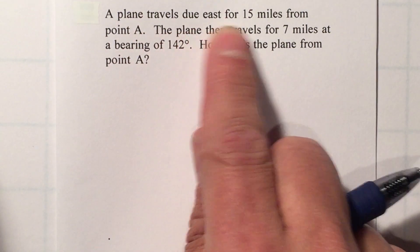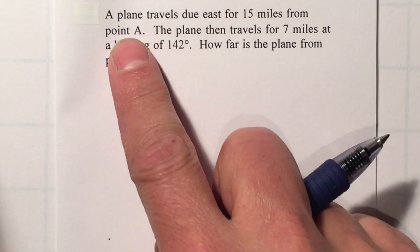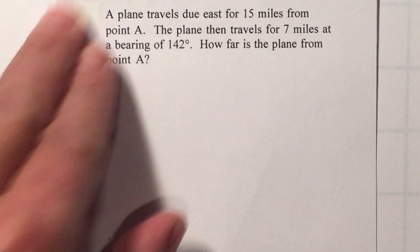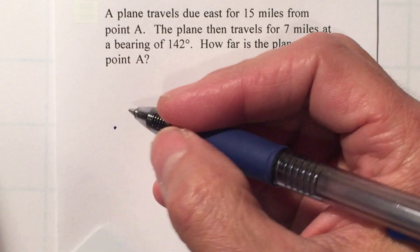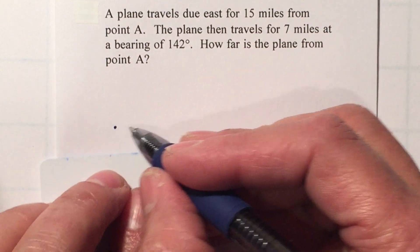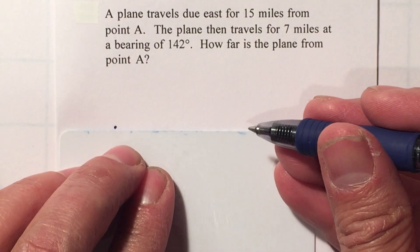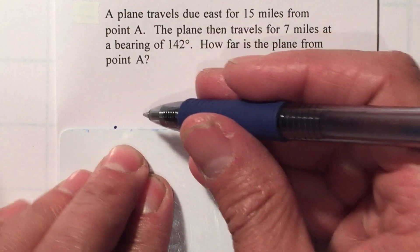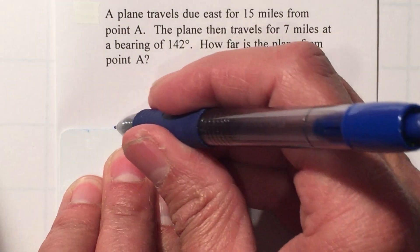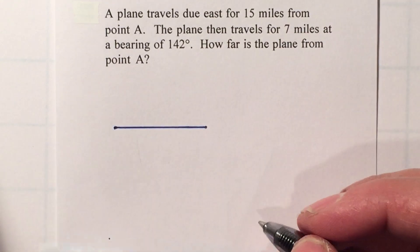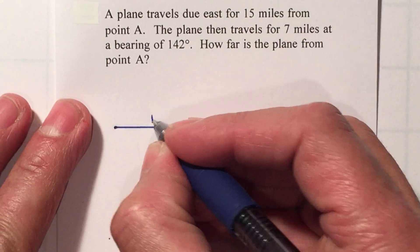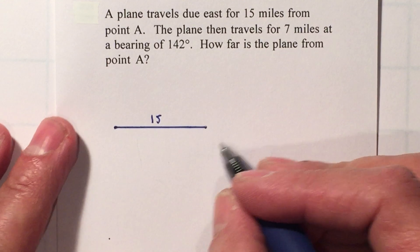A plane travels due east for 15 miles from point A. So the first time the plane travels is going to be due east. Remember, east is towards the right, and that's going to be for 15 miles. You want to make sure you make a horizontal line and it's going to be 15 miles.